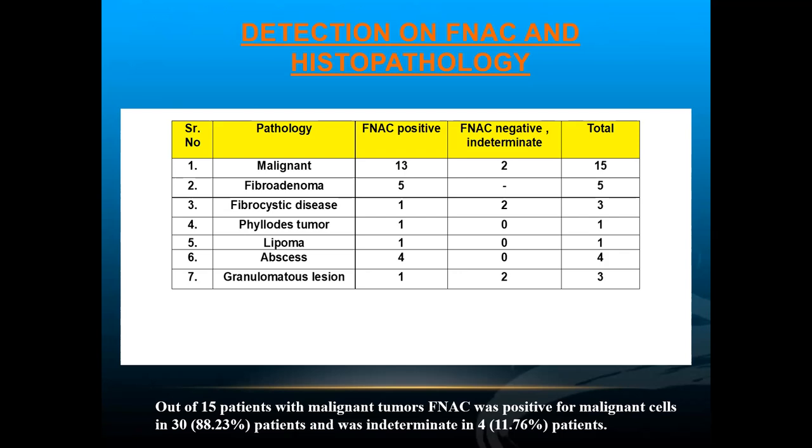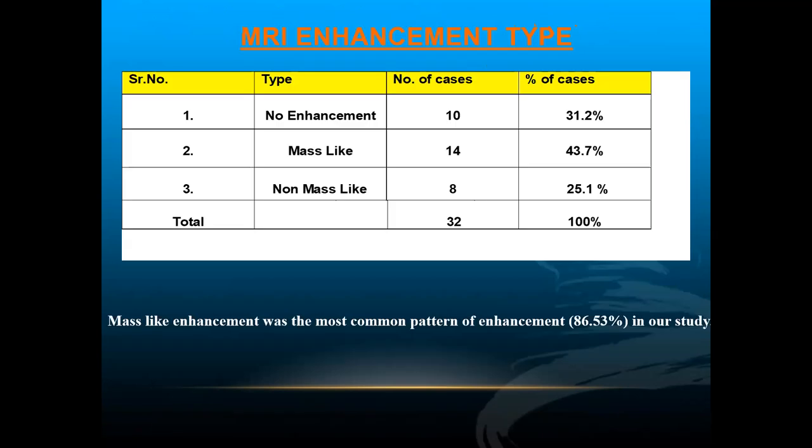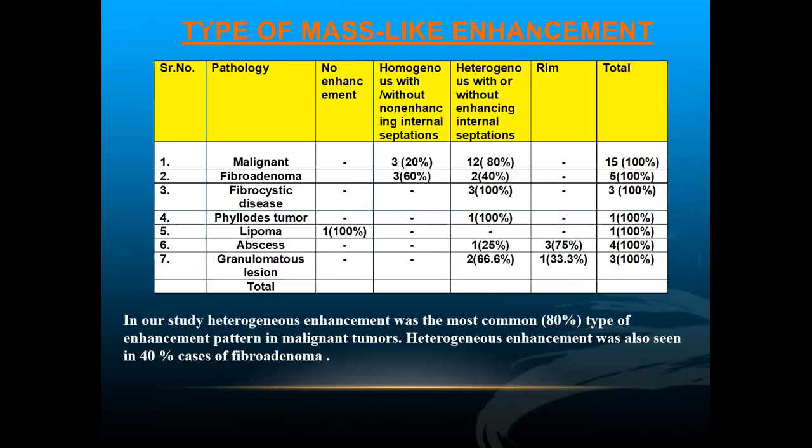Regarding MRI enhancement types: there are three types — no enhancement, mass-like, and non-mass-like enhancement. Mass-like enhancement was the most common pattern, seen in 43% of cases — that is 14 out of 32 patients.